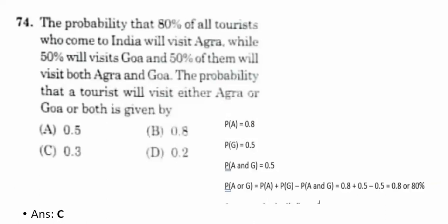Seventy-fourth question: 80% of tourists visiting India will visit Agra, 50% will visit Goa, and 50% will visit both Agra and Goa. Find the probability of visiting Agra or Goa. Using P(A ∪ G) = P(A) + P(G) − P(A ∩ G) = 0.8 + 0.5 − 0.5 = 0.8, which is 80%. The correct answer is B — 80%.